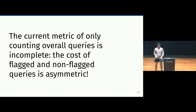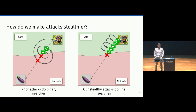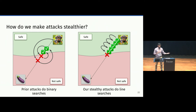So we argue that the current metric of only counting the overall number of queries is not complete. We should not only consider this metric, but also consider as a metric the number of queries that are flagged throughout the attack. We then take a look at existing attacks and wonder how we can make them stealthier, in the sense of issuing fewer flagged queries. We do that by looking at how these attacks work — one of the main operations they do is looking for the decision boundary, and they do that with a binary search, which if one only cares for the overall number of queries is the optimal strategy, but it's going to do around half of the queries on the flagged side of the boundary.